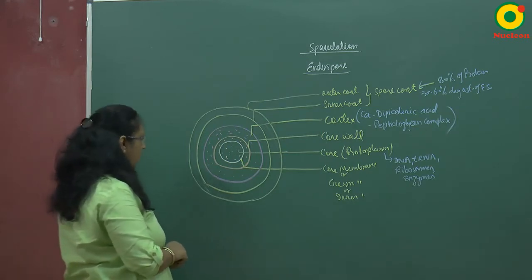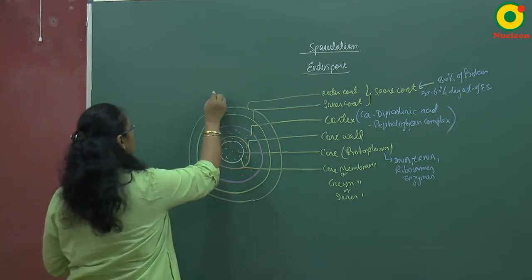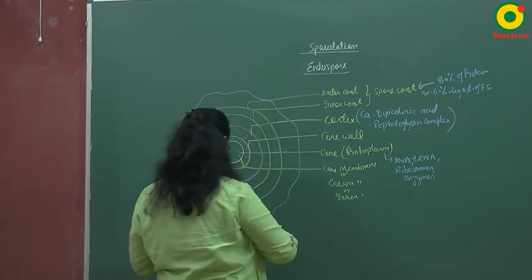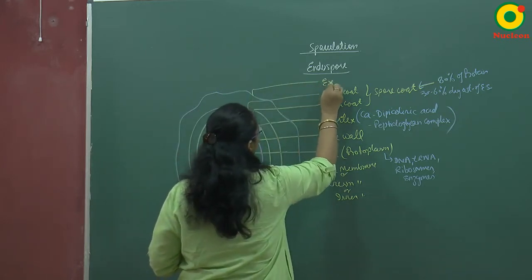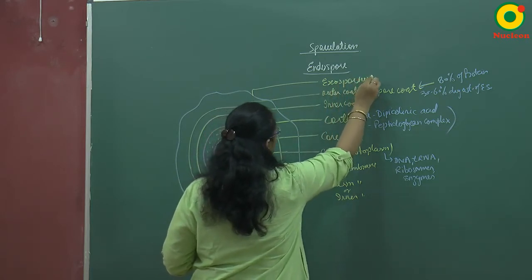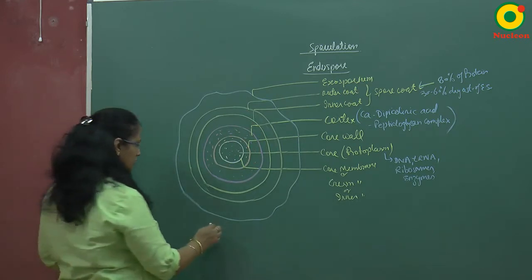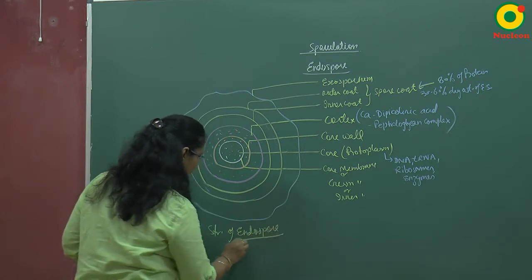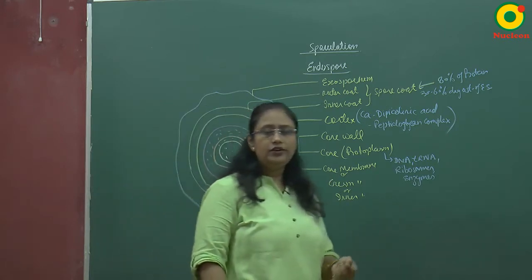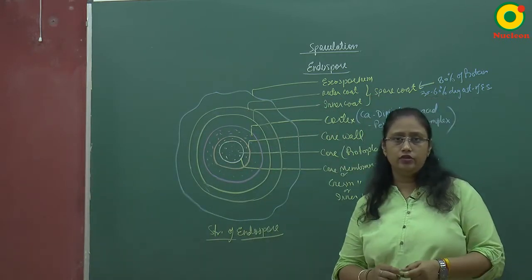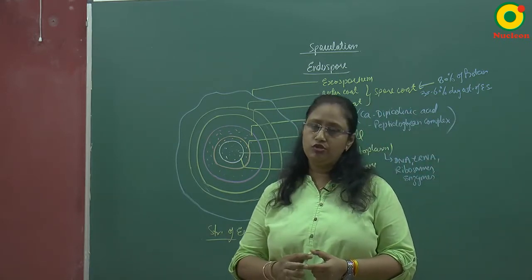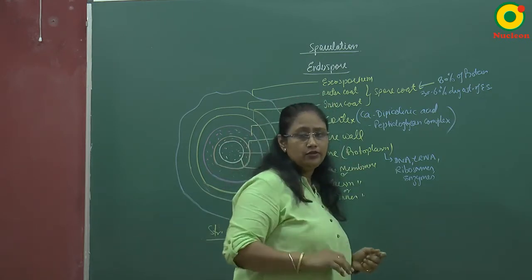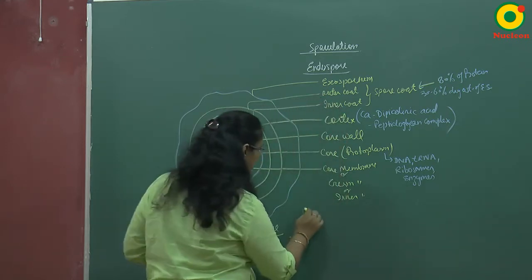The outermost layer surrounding the endospore is the exosporium. This completes the structure of the endospore. The endospore is thick enough to last for many years. Some endospores are pathogenic and very serious.